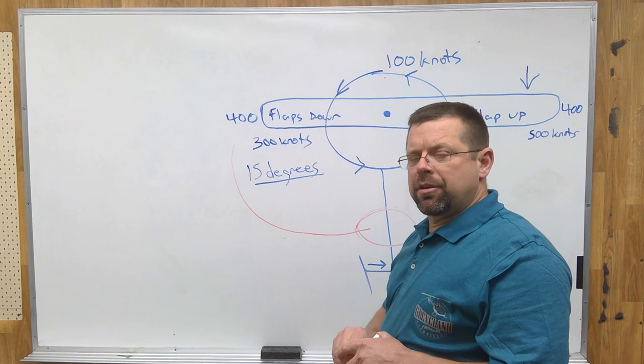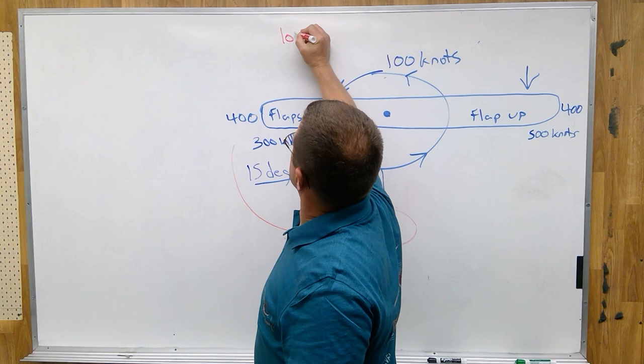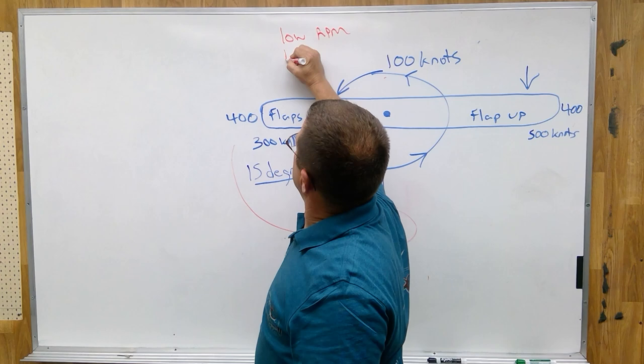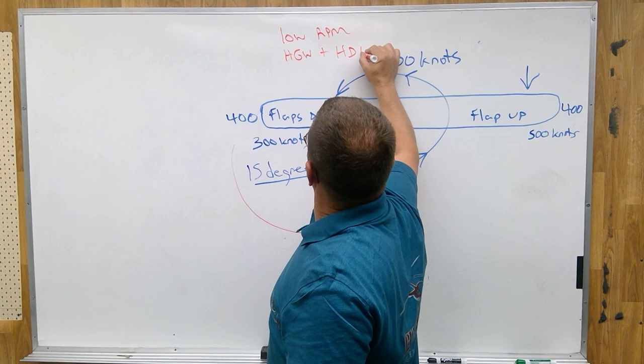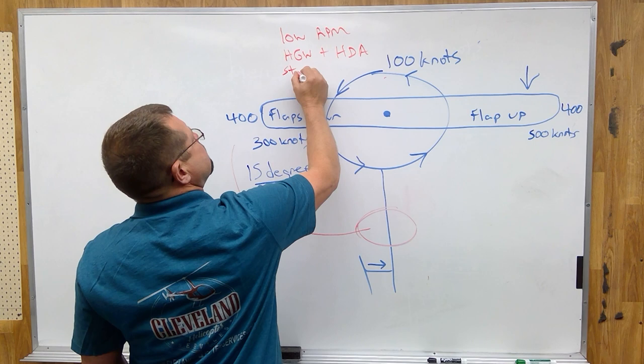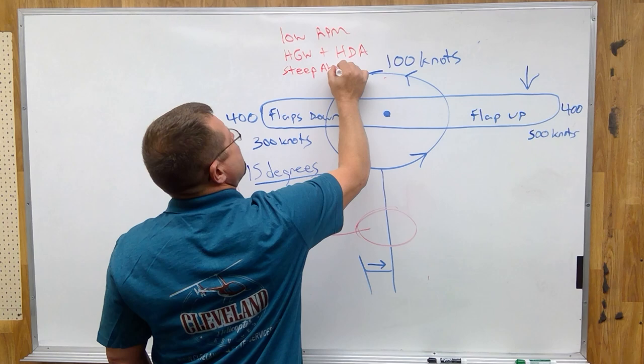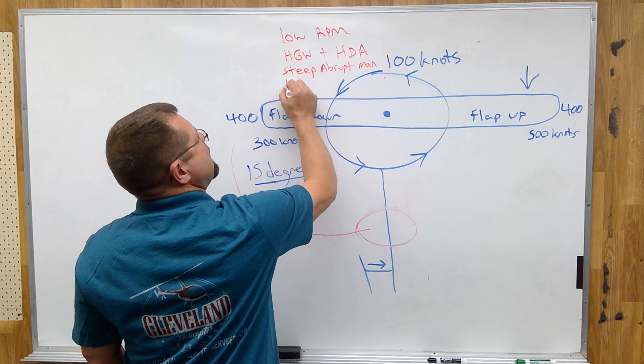But another thing that can cause retreating blade stall would be low RPM, high gross weight, high density altitude, steep or abrupt turns or maneuvers, and turbulent air.